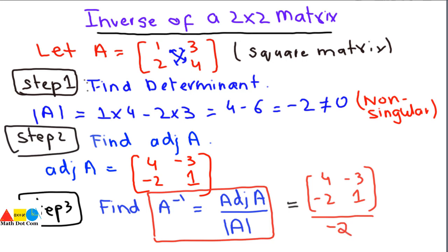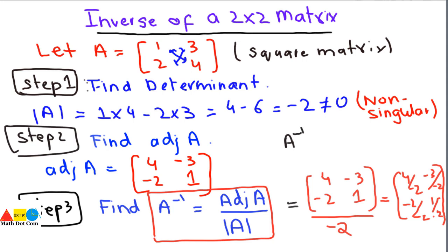We divide every element by minus 2. The resulting matrix is: 4 divided by minus 2, minus 3 divided by minus 2, minus 2 divided by minus 2, and 1 divided by minus 2. Simplifying, A inverse equals: minus 2, plus 3/2, 1, and minus 1/2. This is the final answer for A inverse, found using these 3 steps.